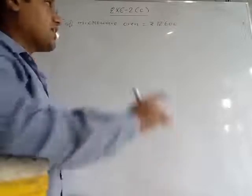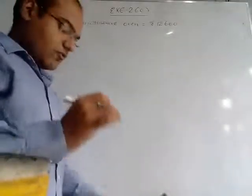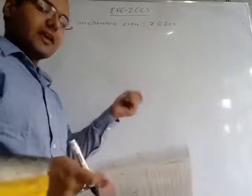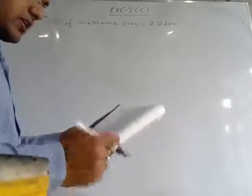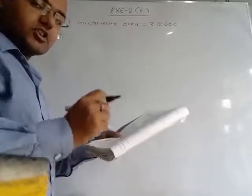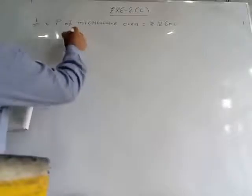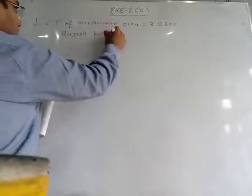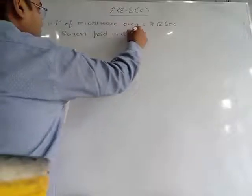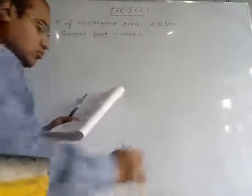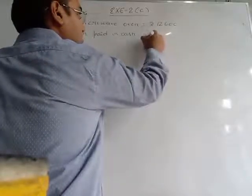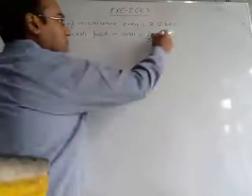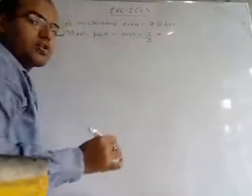Rajesh doesn't have the full amount, so he is giving a portion of 12,600 in cash. The amount is not given in rupees — a fraction is given. We write: Rajesh paid in cash. How much? Two-thirds of the price. Two-thirds is a fraction, not rupees. So we have to multiply this fraction with the total cost of the microwave.